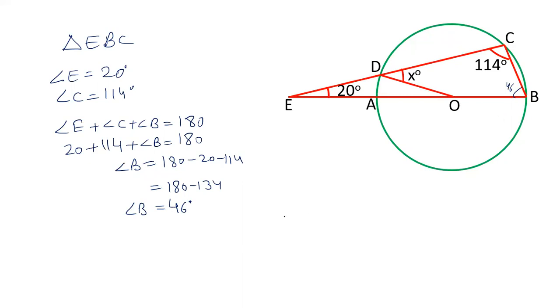Now join OC. In triangle BOC, OB equals OC. Therefore angle B and angle OCB are equal. So angle OCB is also 46 degrees because angle B is 46 degrees.